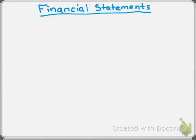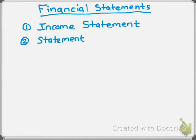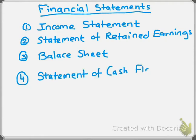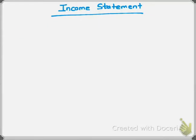There are four financial statements, and this is the order in which they're prepared: the income statement, the statement of retained earnings, the balance sheet, and the statement of cash flows. These four financial statements are prepared in the order that they're listed.